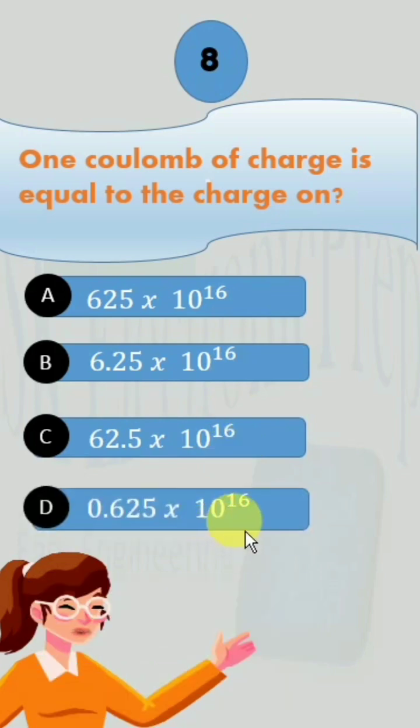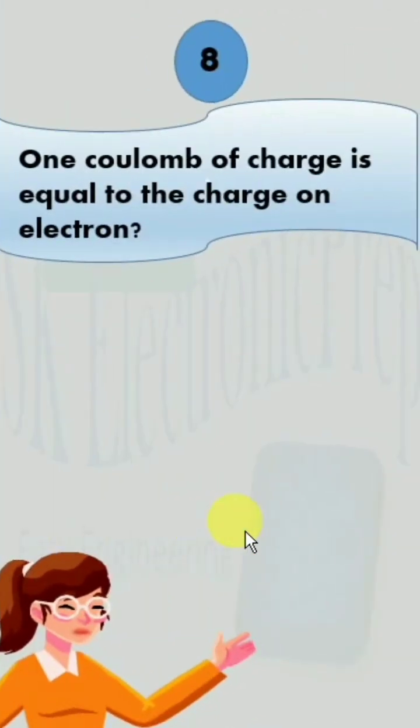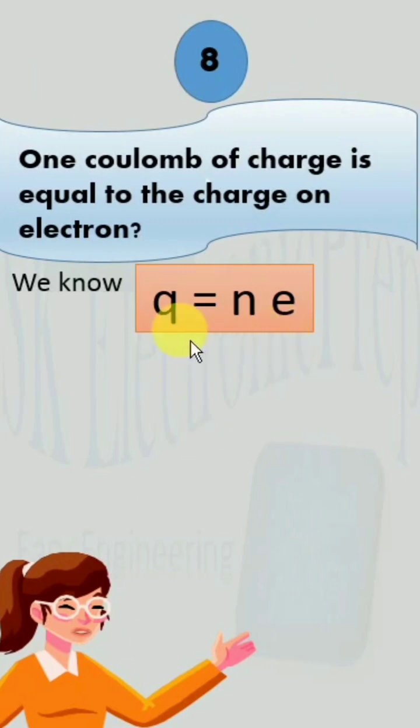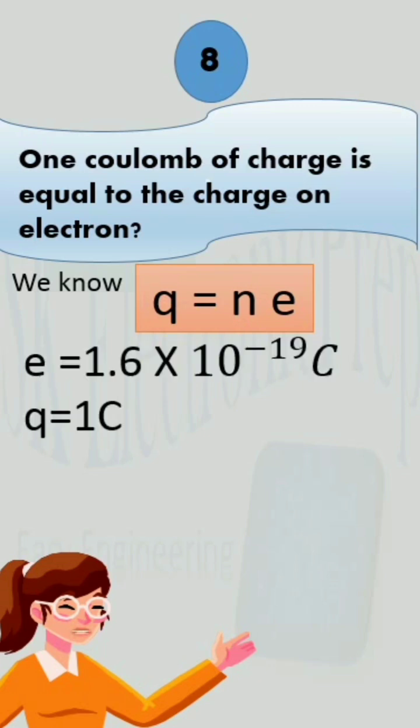and option D, 0.625 x 10 raised to the power 16. We know that Q is equal to nE, where Q is any charge and its unit is 1 coulomb, n is the number of electrons, and E is charge on 1 electron, its unit is also coulomb.